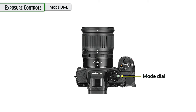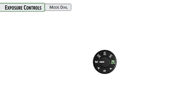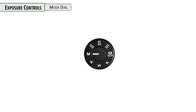The mode dial on the top of the camera is how you control shutter speeds, apertures, and everything else that's going to be used in a certain way to get the exposure on the camera. So let's dive in and talk in detail about what's going on here.